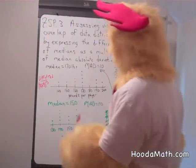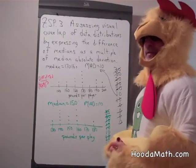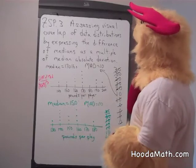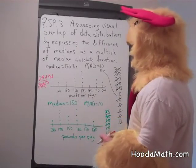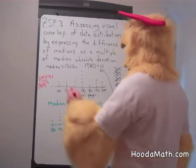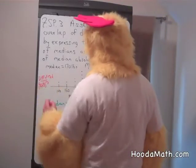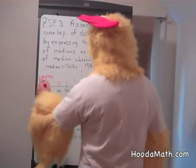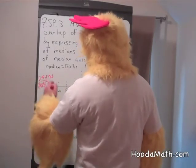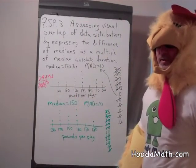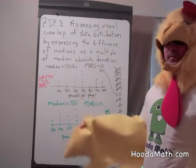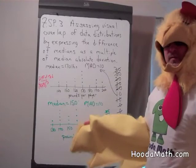We're going to be learning something slightly more complex about looking at data distributions on dot plots and comparing the difference of the medians as a ratio of the variability in these two populations. When we do this, we want the variability to be very similar.